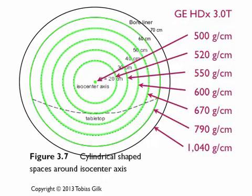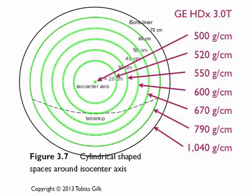Going back to the bullseye diagram looking down the magnet: this diagram was based on a 60-centimeter magnet, but our 3T HDX is 70 centimeters, so we need to add 60 and 70-centimeter markers. The values at each ring are: 500 G/cm on the Z-axis, 520 at 20 cm, 550 at 30 cm, 600 at 40 cm, 670 at 50 cm — all below 720. The 60-centimeter ring is 790, and the bore wall itself can reach 1,040 G/cm. So if we are 10 centimeters away from the bore wall in any direction, we are within the cylindrical volume where the gradient cannot exceed 670 G/cm — safely below 720 on this GE 3T HDX magnet.